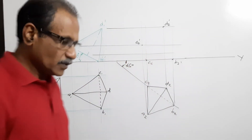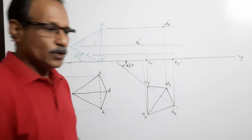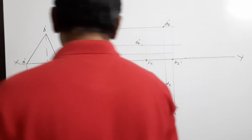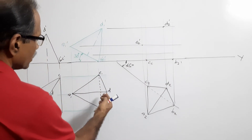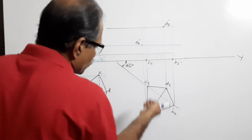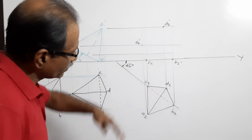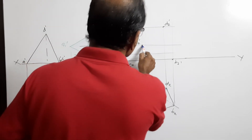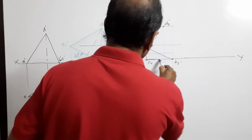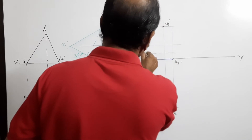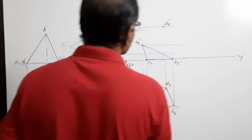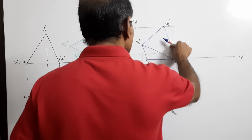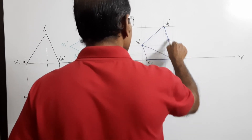Now you have to make the visible edges firm and the invisible edges dotted. How will you decide what is visible and what is not visible? The tetrahedron is resting on this side — this corner A is lifted up. So when you look from this side, this portion ABC will be visible. This is the physical boundary and that has to be visible and firm — it cannot be dotted.